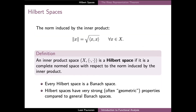Since every inner product space is also a normed space, we can also consider the completeness of the space. And this way we arrive at the main concept of this section, namely Hilbert spaces. By definition, a Hilbert space is an inner product space which is complete as a normed space. Here we consider the normed space properties of X with respect to the norm induced by the inner product. Similarly as in the case of normed spaces, the completeness of the space is highly dependent on the choice of the inner product, and therefore the Hilbert space property depends closely on both the vector space X and the particular inner product.